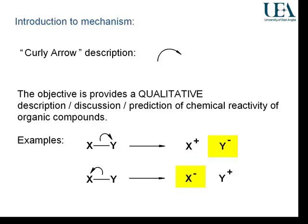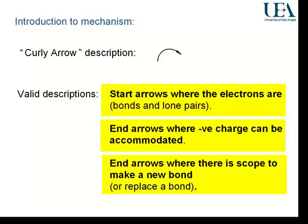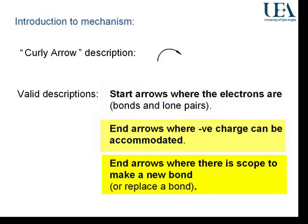You need to look at the structures that are built up. It is the degree of charge stabilization in these products which is going to determine which of these two possibilities that change in bonding is going to take place. The arrows start where the electrons are. They end where negative charge can be well accommodated, or at a position in the molecule where there's a possibility to change the bonding in a further way.